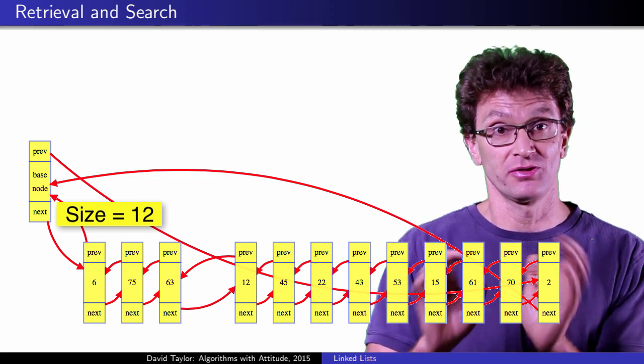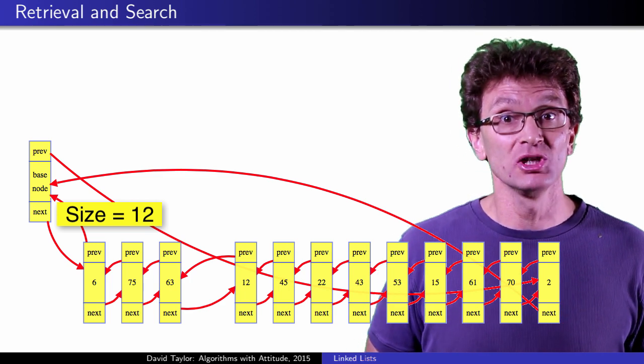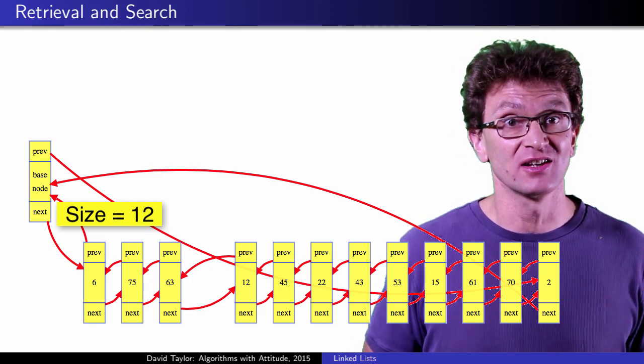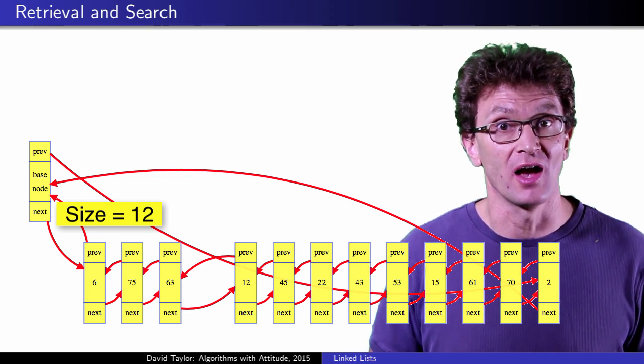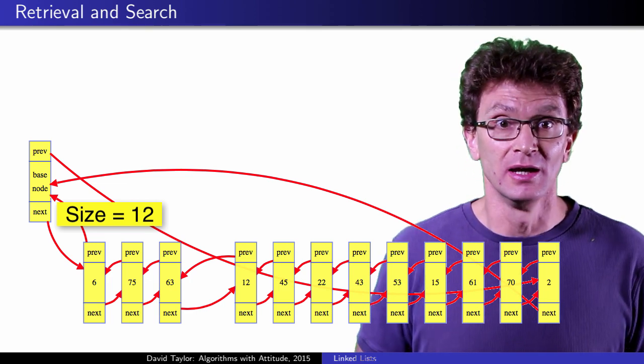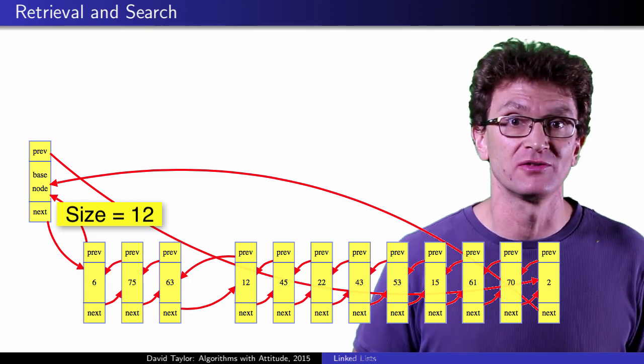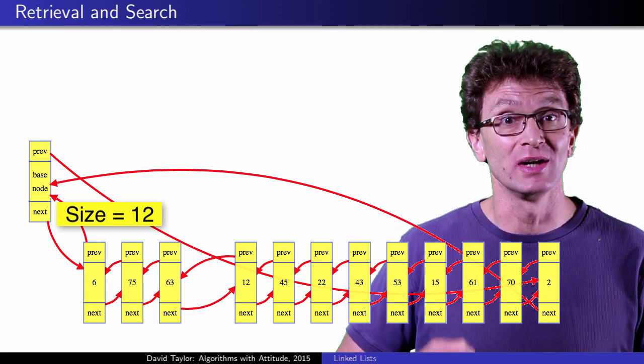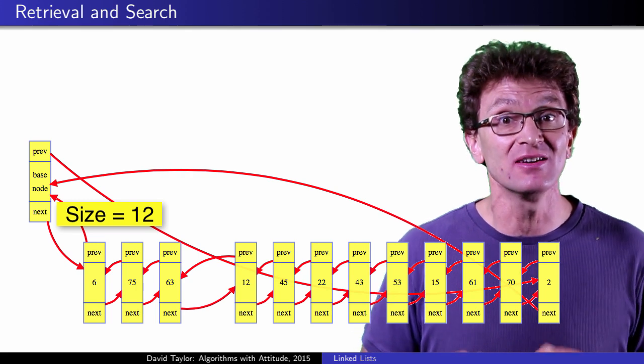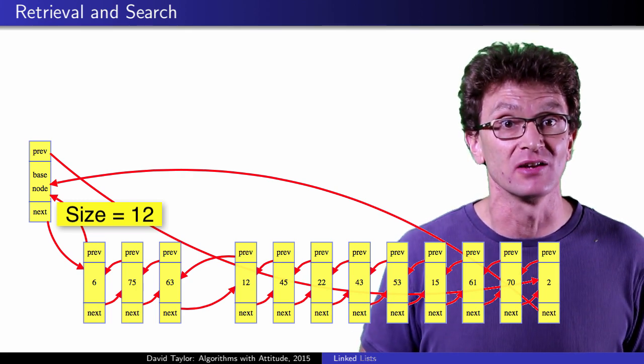What if you want to get the thousandth item in a list? Well, you have to walk through the list to get there. Maybe you are clever, and your code checks the list size, and if it is under 2000, it walks backwards from the tail, instead of forwards from the head, but worst case, to get to an indexed location, it takes linear time in the size of the linked list.